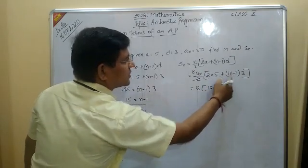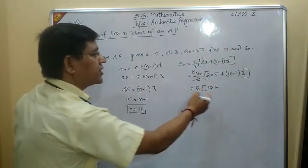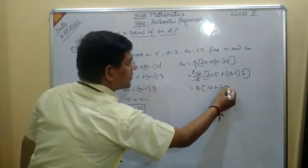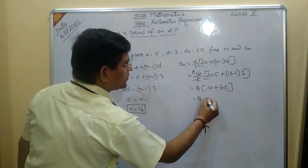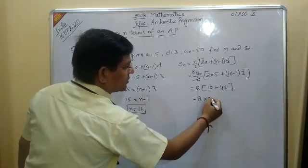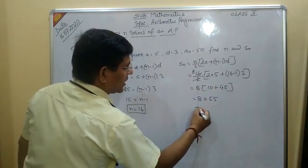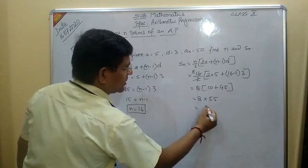16 minus 1 is 15. 15 into 3 is 45. Right? 8 into 5 is 40. 8 into 5 is 40 plus 4 is 40.